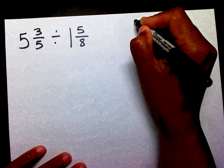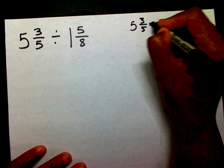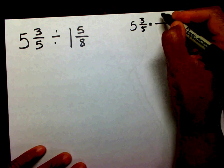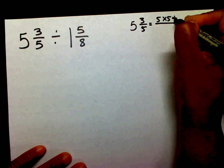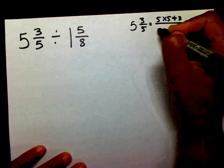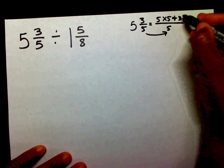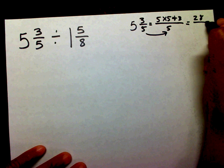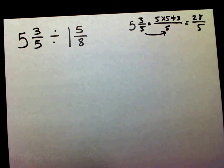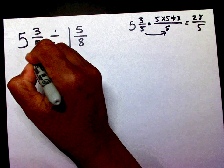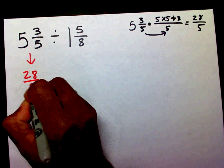Over here on the side, I'm going to say five and three-fifths equals five times five plus three over five. Five times five is twenty-five plus three is twenty-eight. So instead of writing five and three-fifths, I can write twenty-eight-fifths.